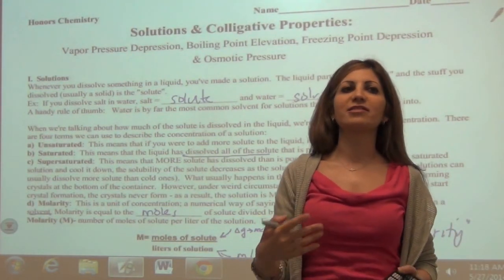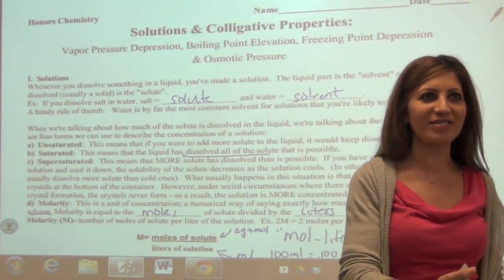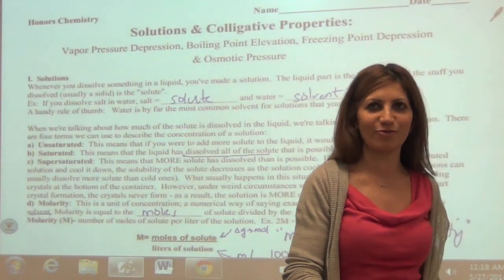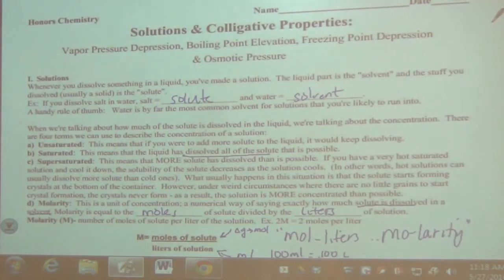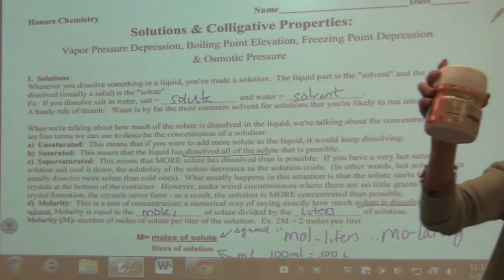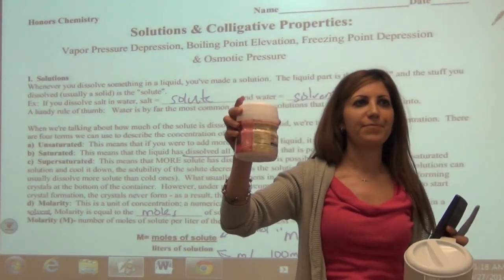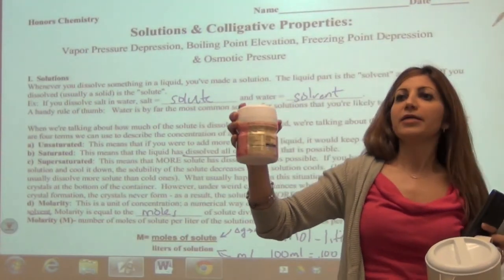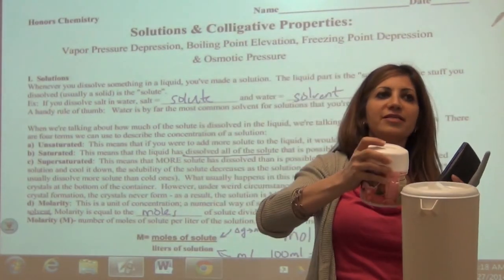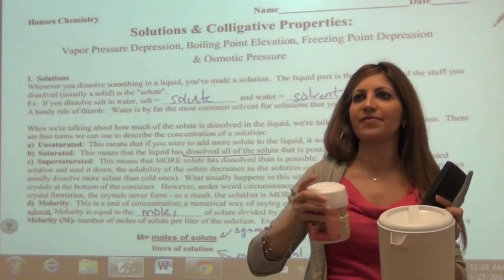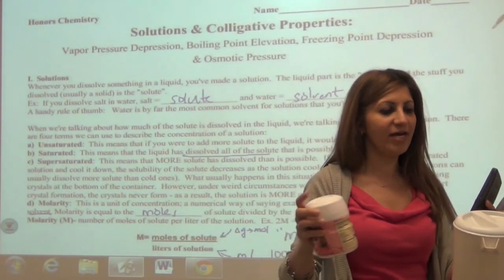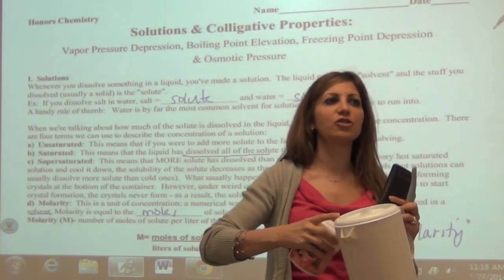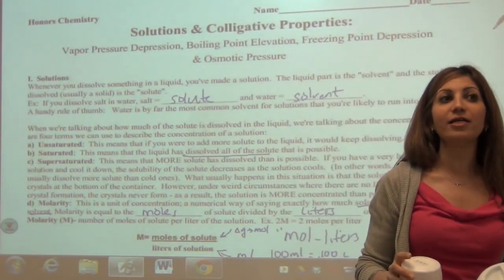If you wanted to make a solution like Kool-Aid or Country Time Lemonade, let me grab the powder here — you would take a certain amount of powder and add water to it. So you'd put this into the container, add water, then stir it. That's your solution.